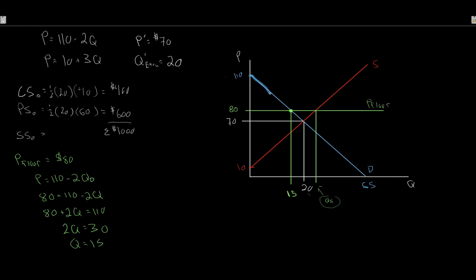With the price floor of $80 and new quantity exchanged of 15, the new consumer surplus is below the demand curve above the price floor. Consumer surplus = ½ × 15 × (110 − 80) = ½ × 15 × 30 = $225. Our consumer has definitely lost — the consumer is the loser in this case, going from $400 down to $225.